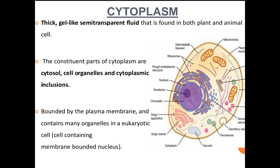Cytoplasm is bounded by the plasma membrane and contains many organelles in eukaryotic cells. A eukaryotic cell is one where the nucleus is covered with a membrane called the nuclear membrane. If the nucleus is naked — meaning there is no boundary around the nucleus — then such cells are called prokaryotic cells. In eukaryotic cells we can see many organelles.